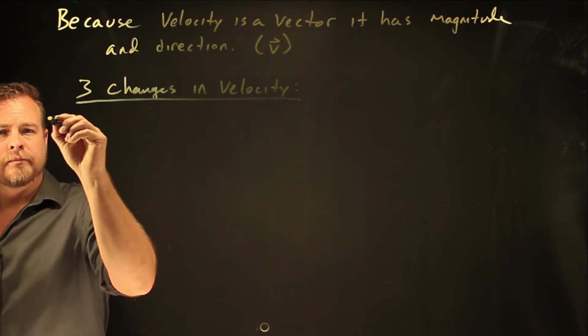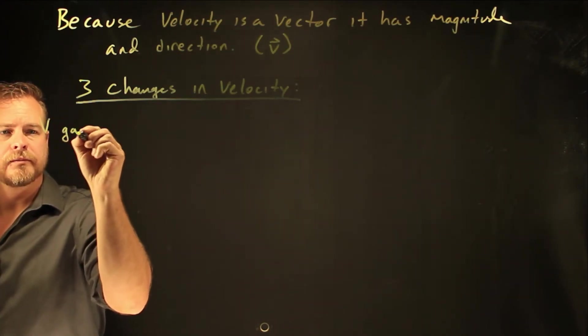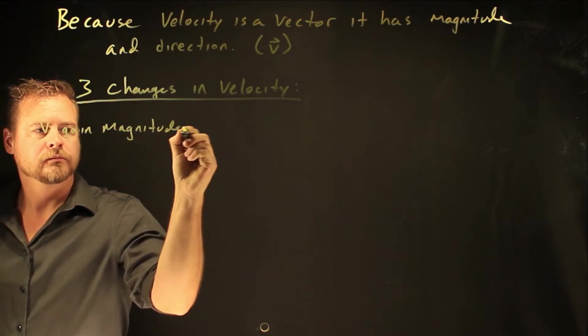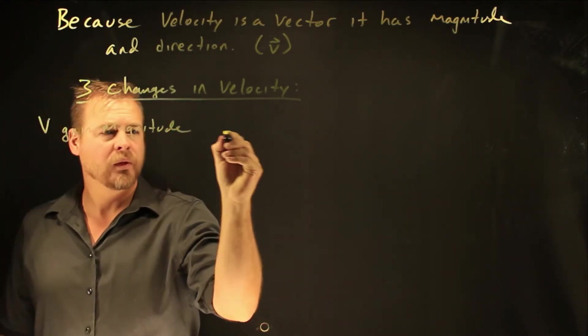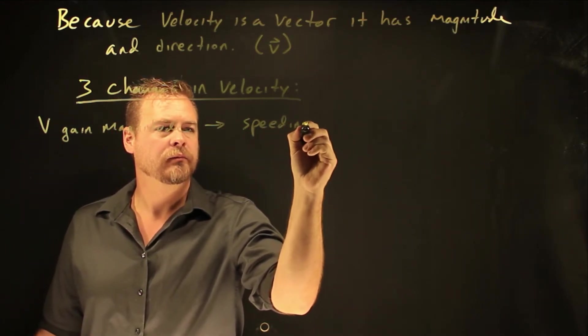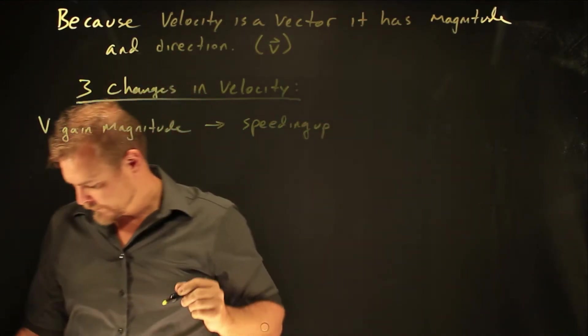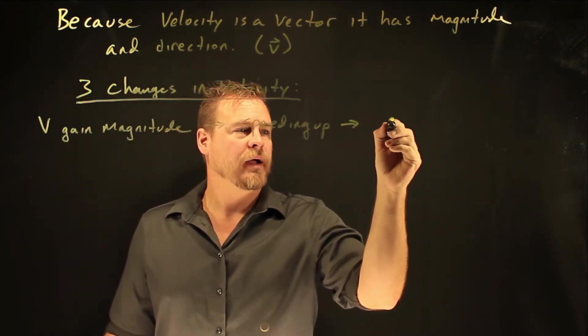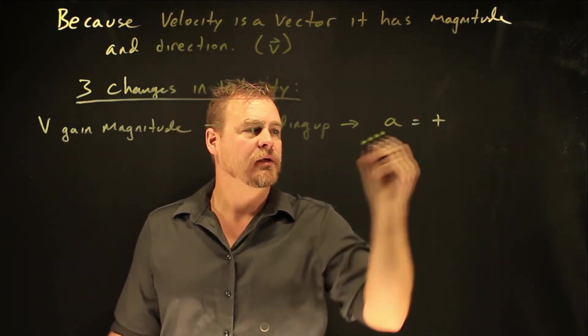So if v gains magnitude, we say that it's speeding up. And if that speeded up, my acceleration would be positive.